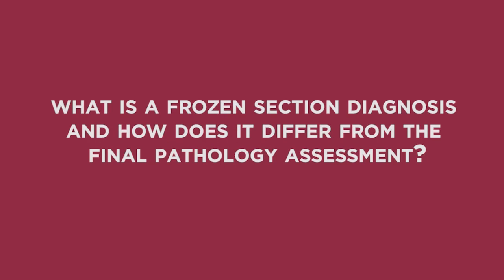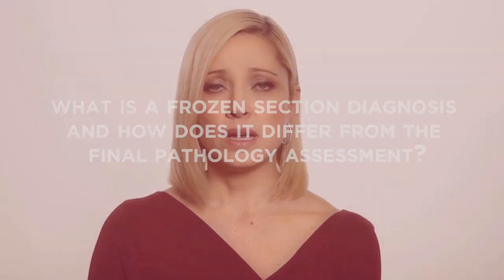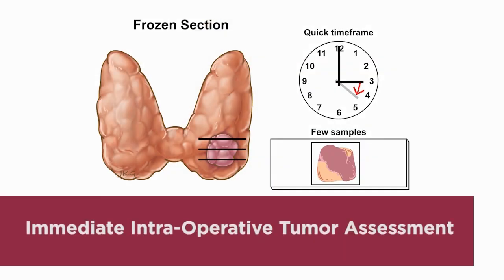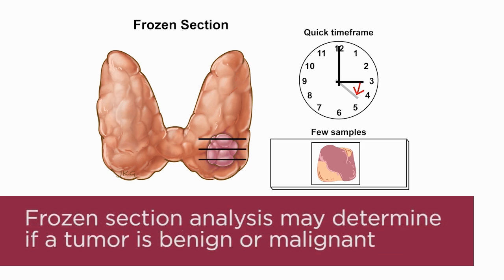Frozen section analysis is performed during the surgery and involves the immediate assessment of the tumor. The intent of a frozen section analysis is to diagnose the types of cells making up the nodule and to determine, in most instances, whether it is benign or malignant. Frozen sections should be performed for the purpose of making a decision about how the surgery should proceed. If the results will not alter the course of the surgery, then in general it should not be performed.